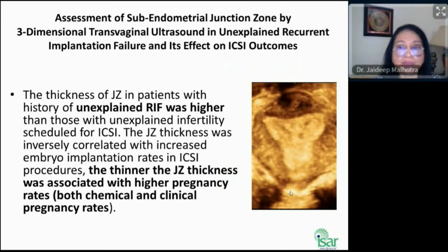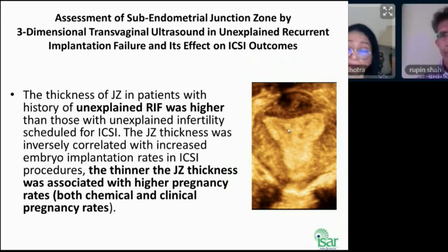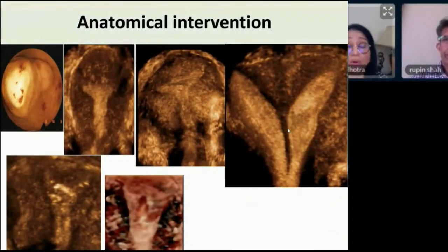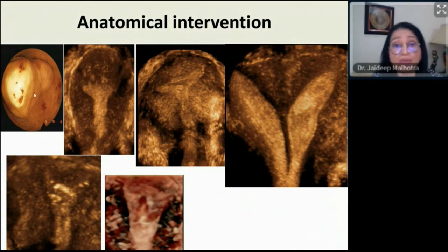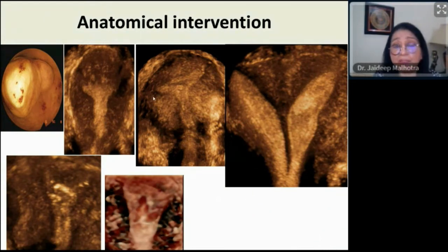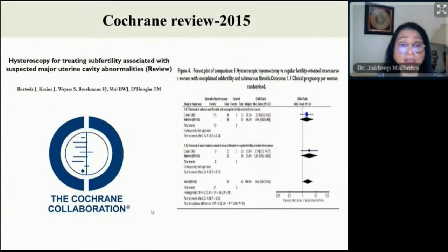The junctional zone — the interface between endometrium and myometrium — is important. Normally 2 to 8 mm, but in recurrent implantation failure patients it can be much larger, maybe 12 to 14 mm. Other anatomical factors affecting implantation include submucous fibroids, larger intramural fibroids, adenomyosis causing a T-shaped cavity, uterine septum, intrauterine adhesions (synechiae), and chronic endometritis.